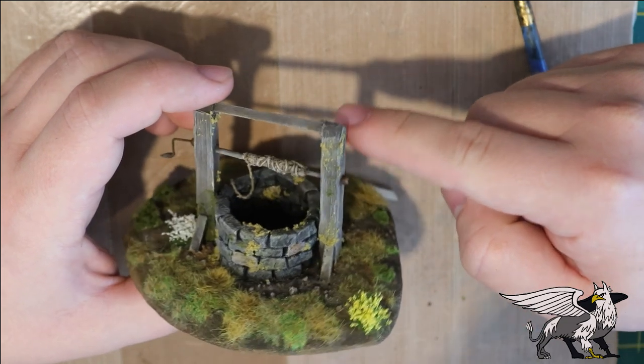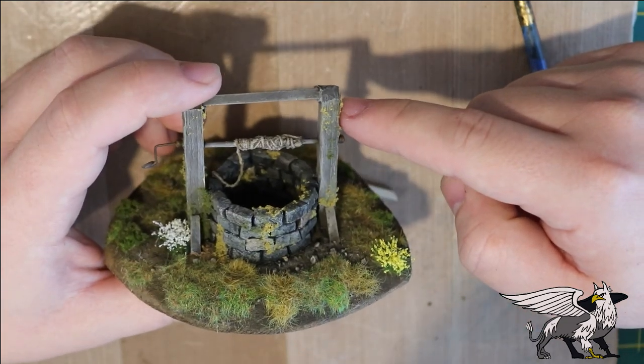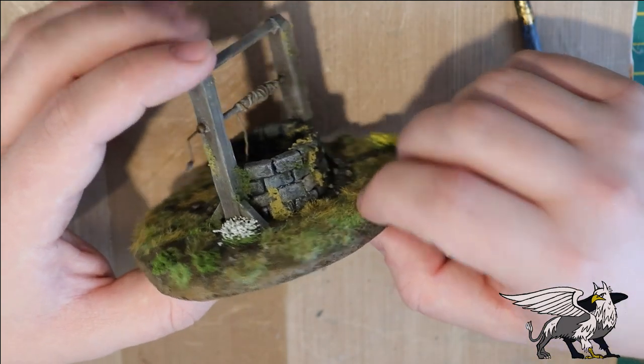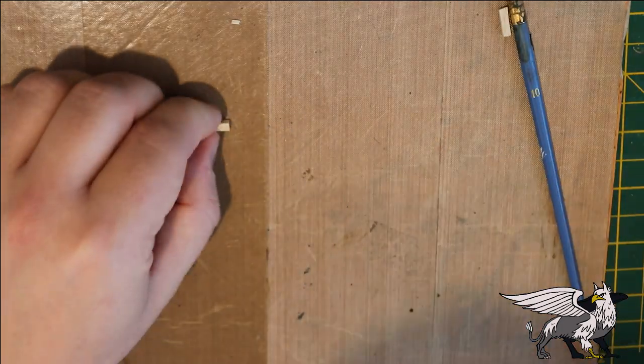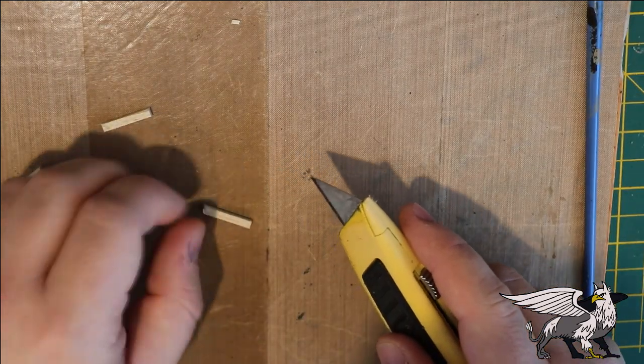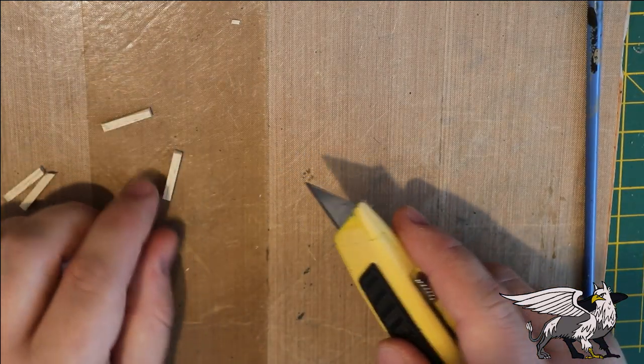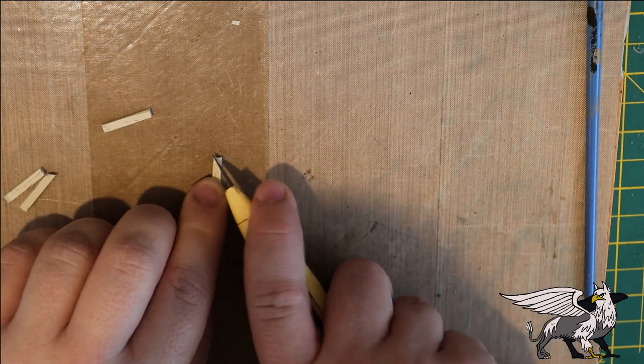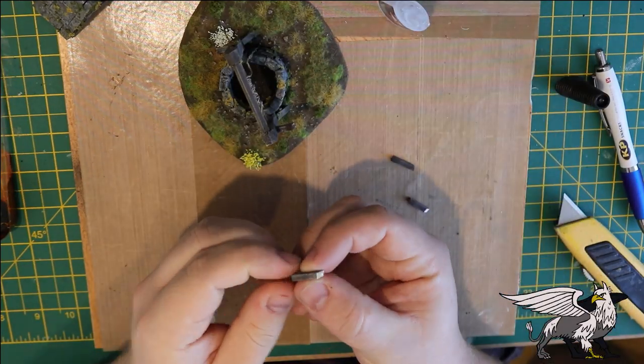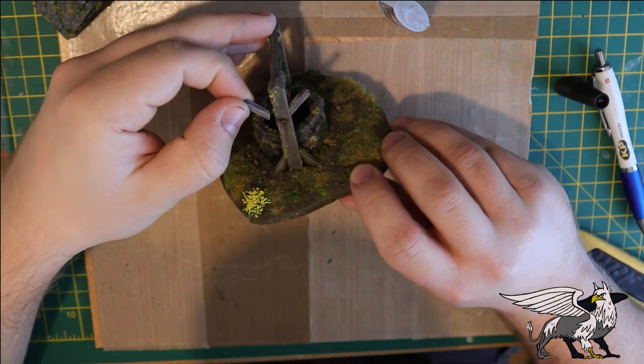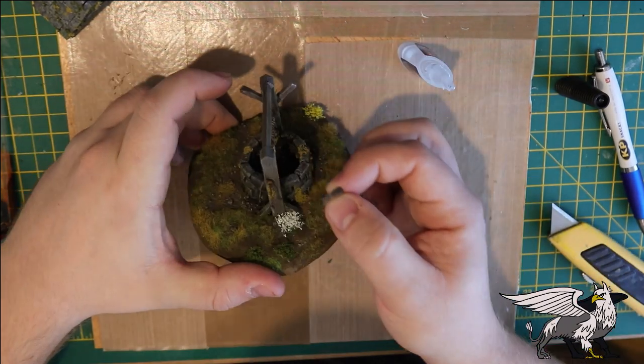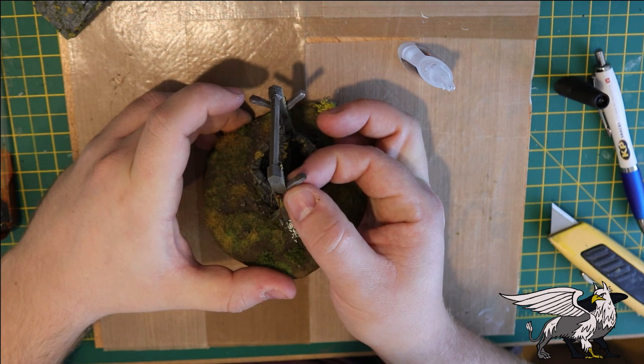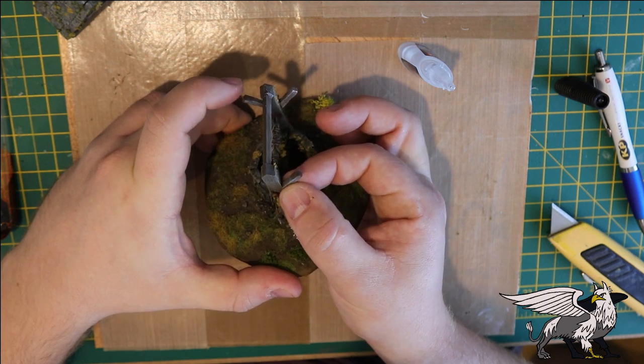Now this part here I wasn't overly happy with. It didn't look like it was very well supported, and I wanted to add a few extra bits of wood. So even though I said all the paintwork was done, I had to add some bits just for my own peace of mind. So I cut off a few pieces, painted them up the same way as I painted the rest of the wood on the well, and I super glued them to the posts.